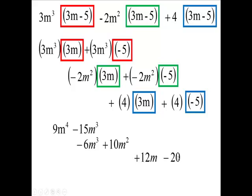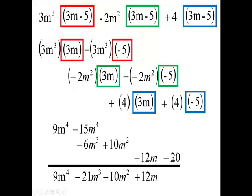Draw your line, bring down the 9m⁴. You have -15 and -6, so your debt goes up to -21. -21m³ when you add like terms, I get a like term. Bring this one down, bring this one down, and bring this one down.